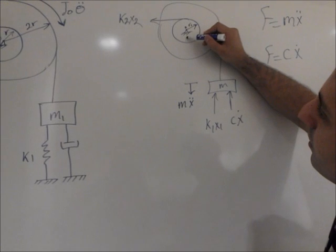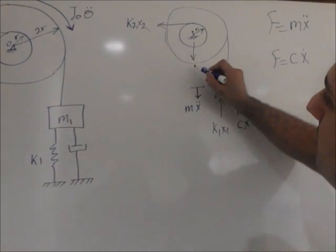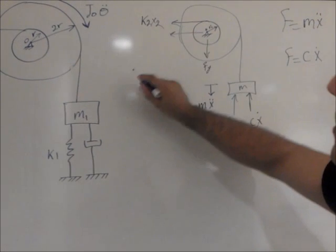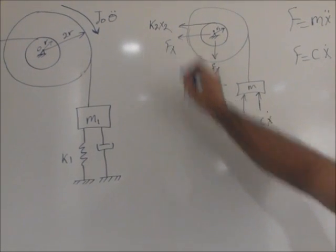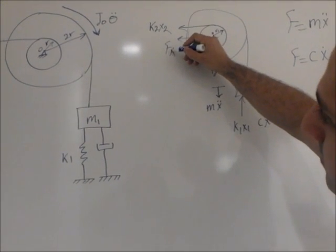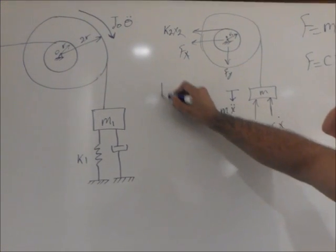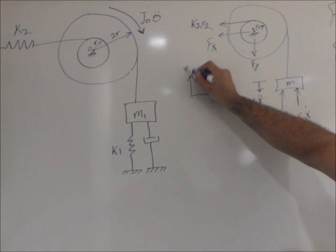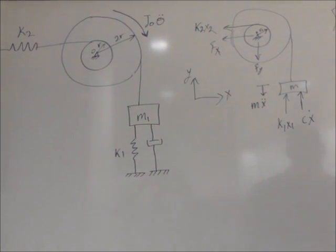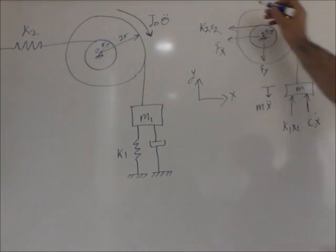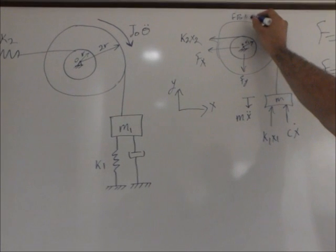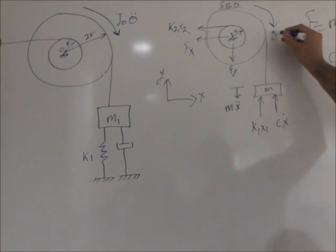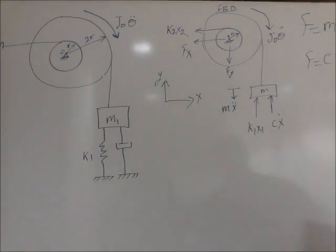And then you know that for this pin, we have reaction forces. Let's call this FY, and then we have this as FX. Okay. And we can say our reference is, this is the positive direction. Alright. So you've got the free body diagram. And don't forget, it's rotating this way, moment of inertia.